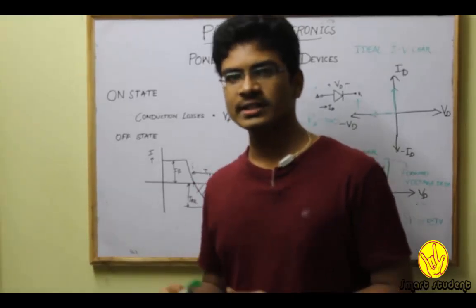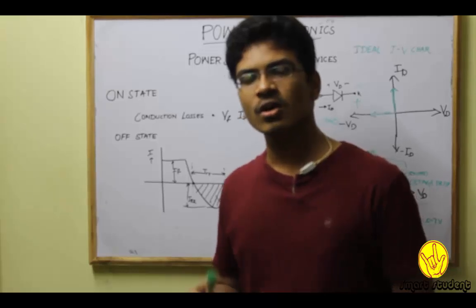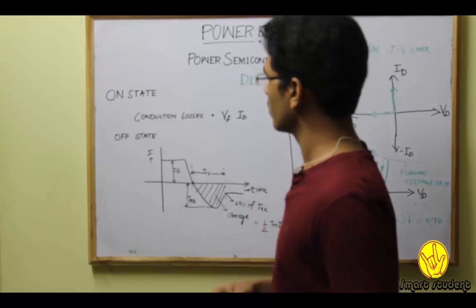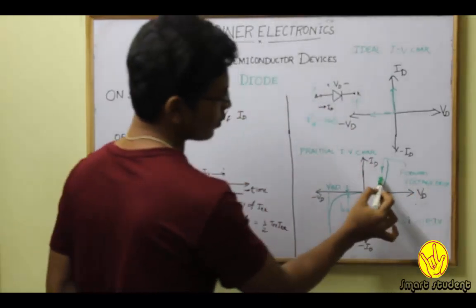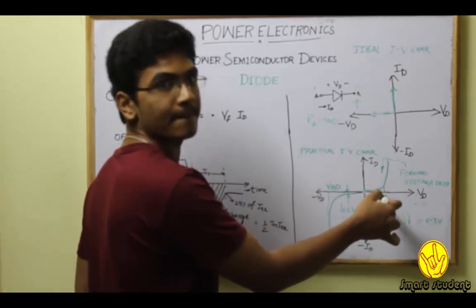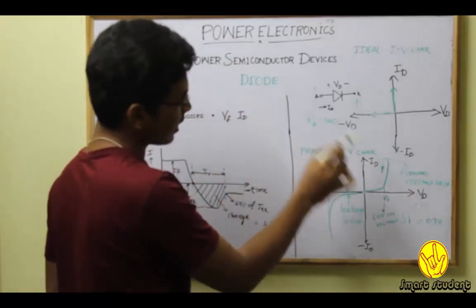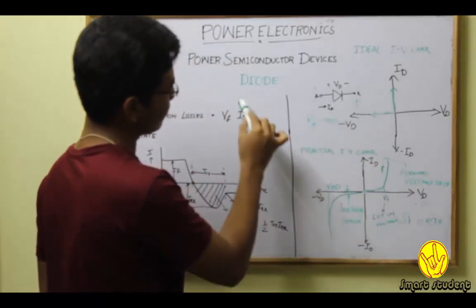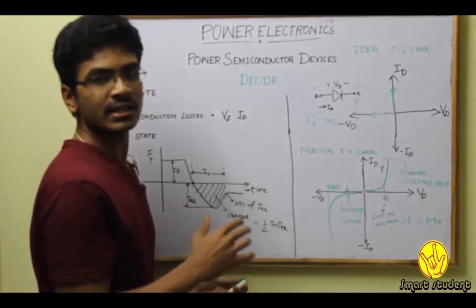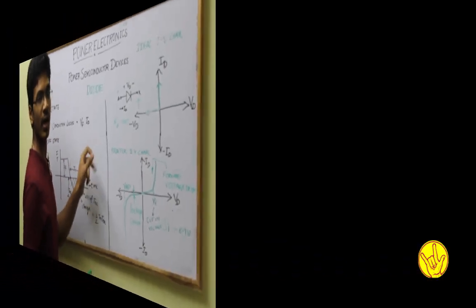Now we are going to discuss some important parameters to be considered in the on-state and off-state operation of a diode. During the on-state operation, a forward voltage drop occurs. Let the forward voltage drop be V-F and the current flowing through the diode be I-D. Then the product of V-F and I-D gives the on-state conduction losses. On-state conduction losses are given by the formula V-F into I-D.